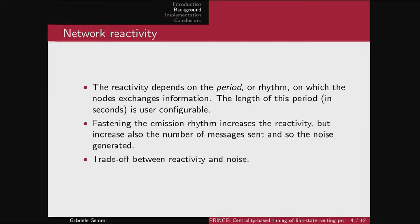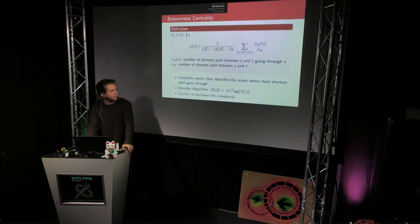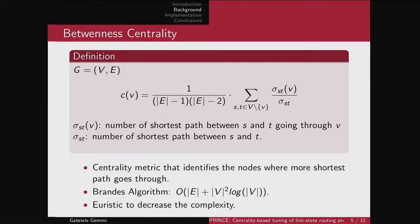The reactivity of the network depends on the period or interval at which routers exchange information about their neighbors. The length of this period can be configured by users in the configuration file. If we fasten the emission rhythm we increase reactivity but also increase messages sent. We want to find the optimal trade-off for each node. The betweenness centrality is a metric that measures how many shortest paths pass through a node.